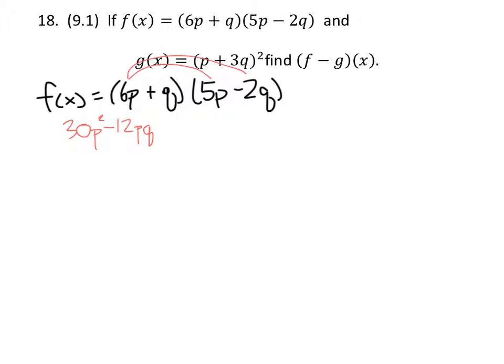As you can see that gives us 30p squared minus 12pq, and then we'll distribute this q over here as well. And this is the expression.